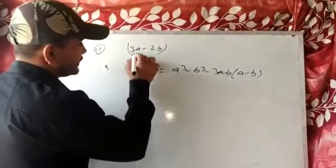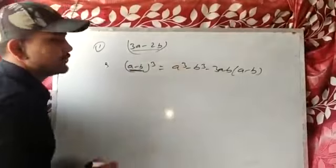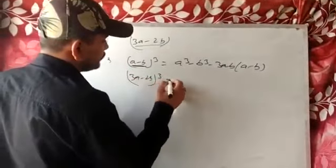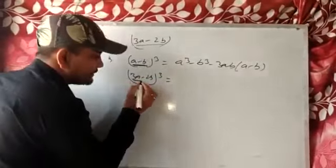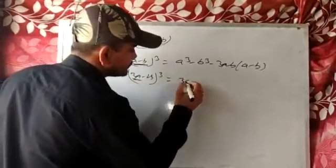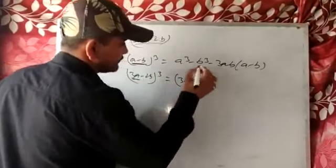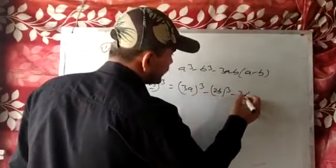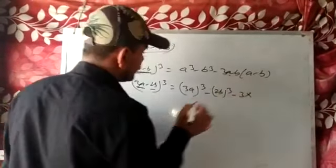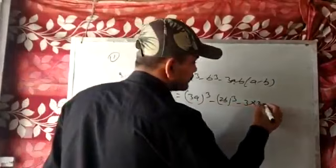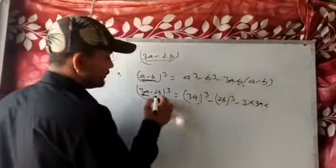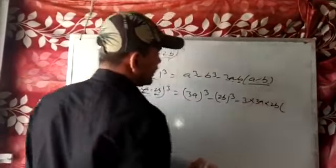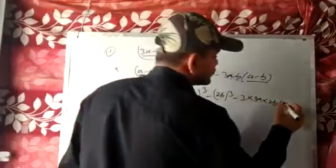In place of a minus b, I will put 3a minus 2b whole cube. So a cube means 3a whole cube, minus b cube means 2b whole cube, minus 3. In place of a I will put 3a, in place of b I will put 2b, and in place of a minus b I will put 3a minus 2b.